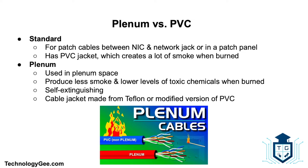Next, plenum versus PVC. There are two categories of twisted pair cabling in terms of fire rating. Standard cabling is suitable for patch cables between network interface cards and the network jack; PVC jackets can create a lot of smoke when burned. Plenum cabling is designed for use in plenum spaces — areas that facilitate air circulation such as ventilator shafts, under floors, or between suspended and permanent ceilings. Plenum cables produce less smoke and lower levels of toxic chemicals when burned, are commonly self-extinguishing, and may be made from Teflon or a modified PVC.